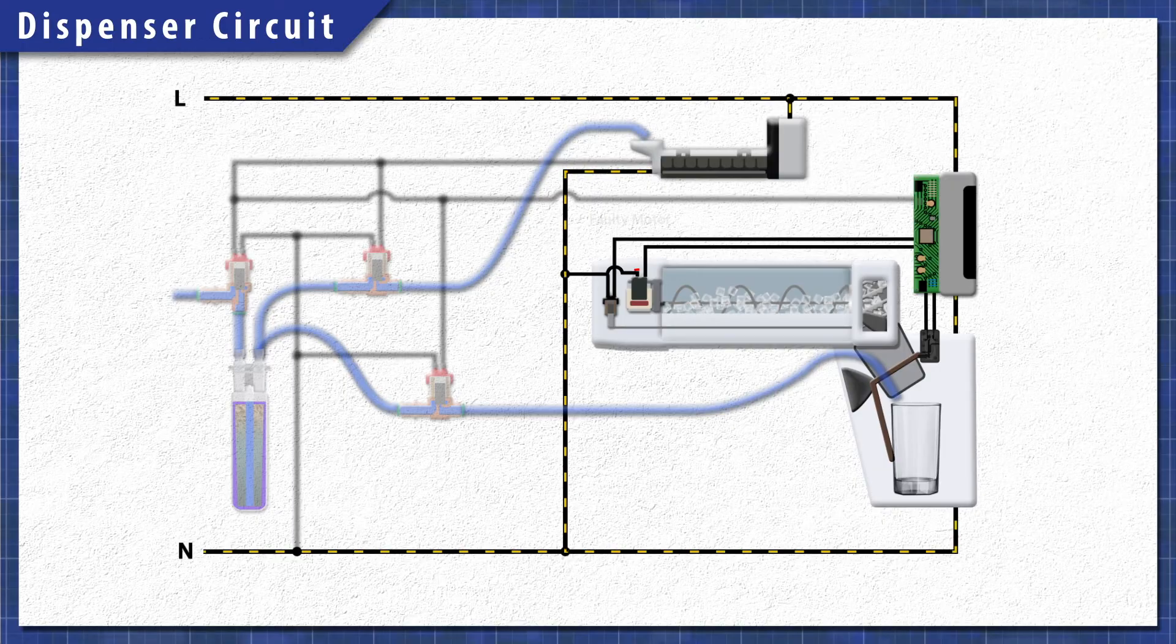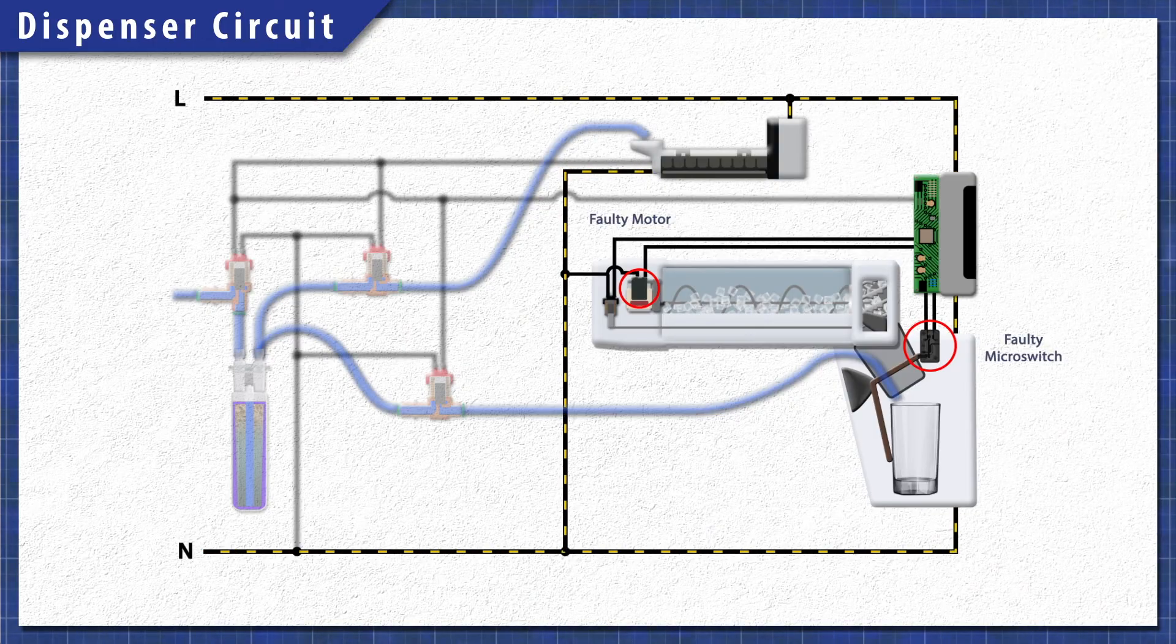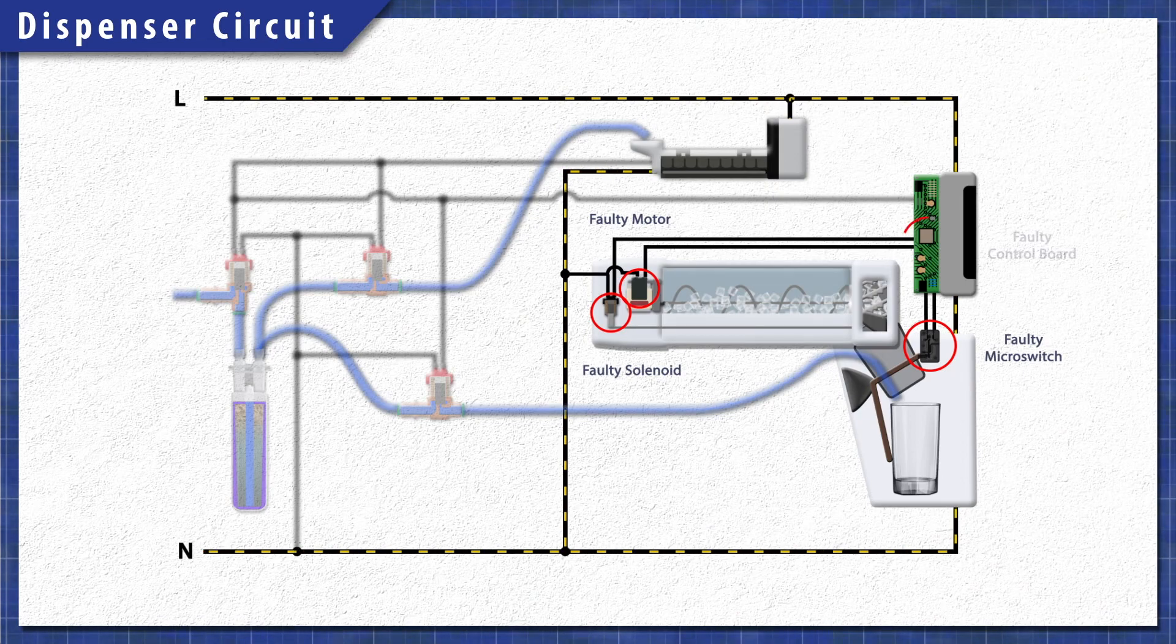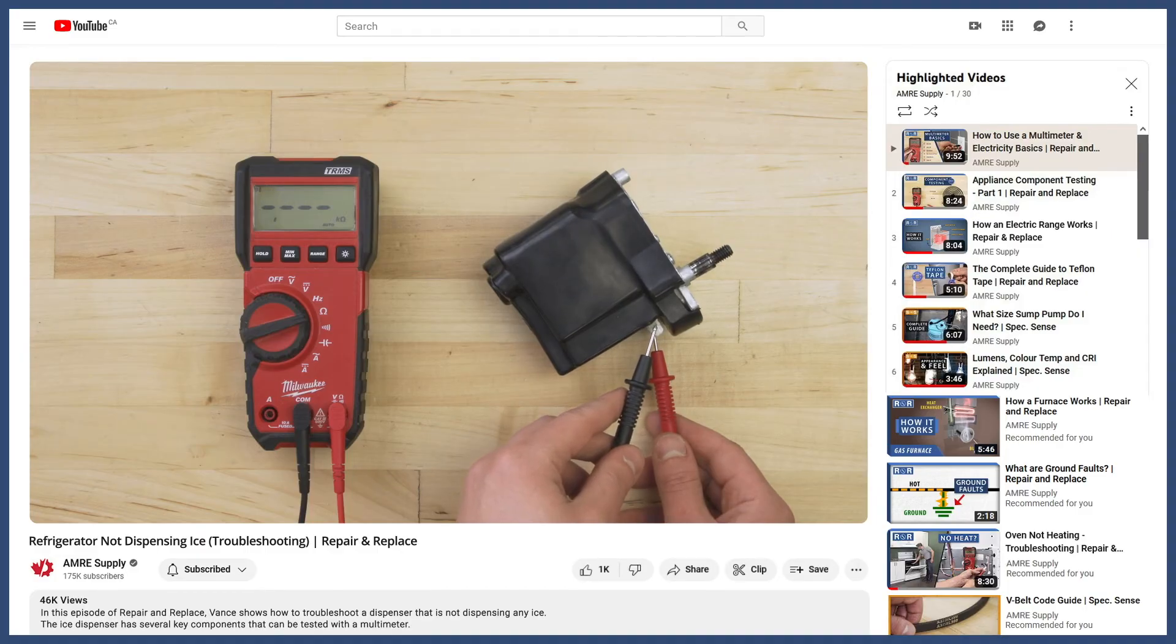If the auger motor fails, it will not push the ice forward. Additionally, a faulty micro switch will not send power to the motor. If the solenoid fails, then the flap will not open and no ice cubes will come out. Alternatively, any issues with the control board can also prevent the dispenser from working. You can see how to troubleshoot this in the video linked below.